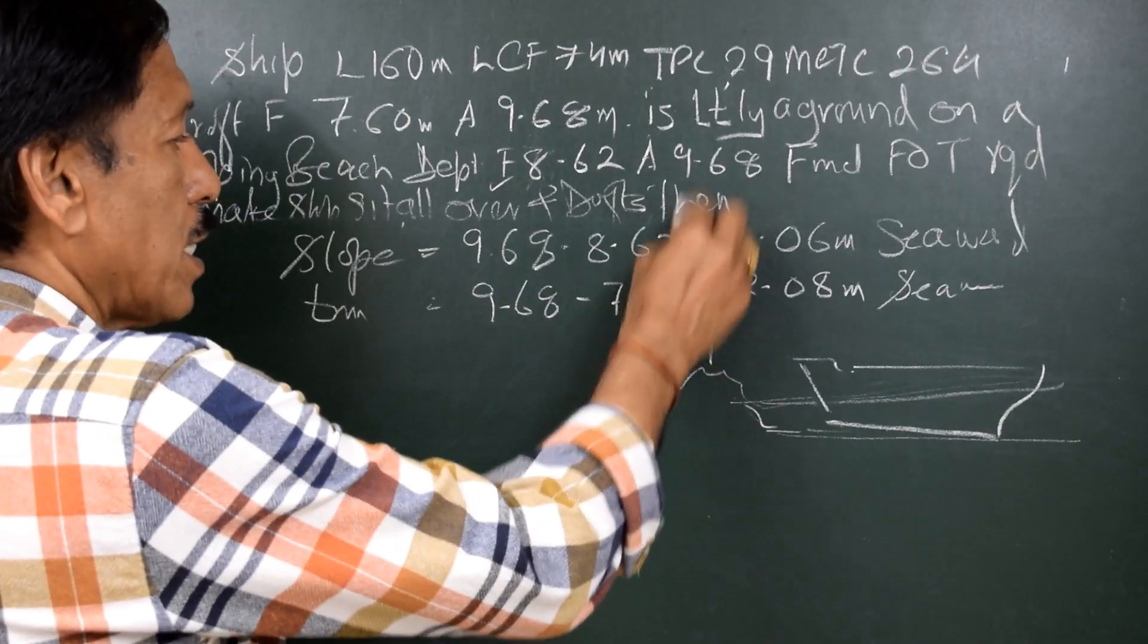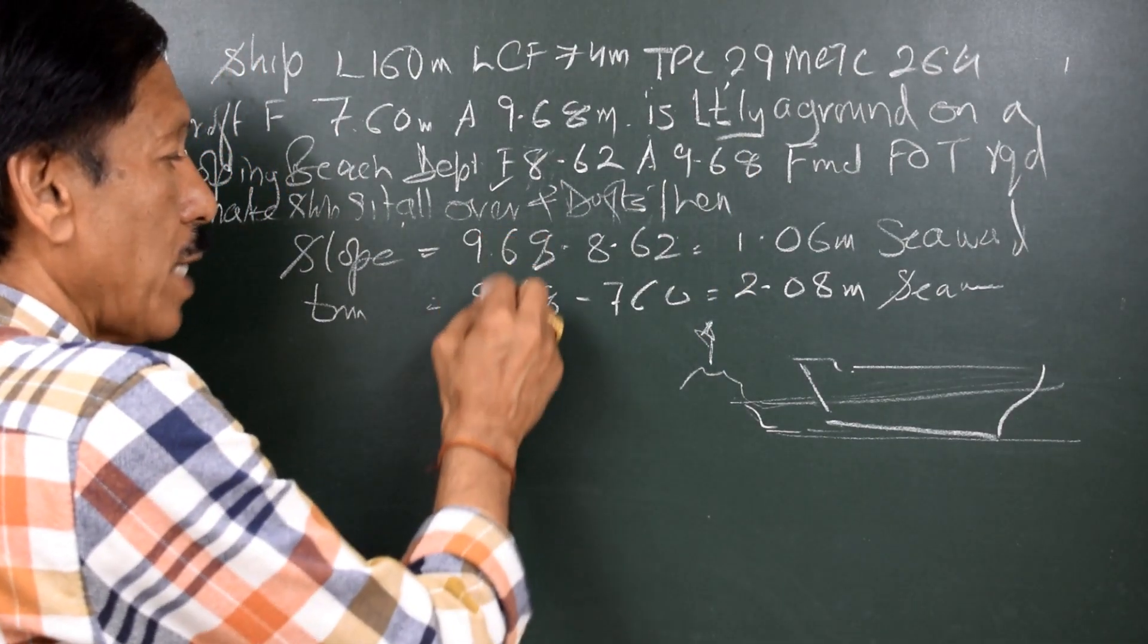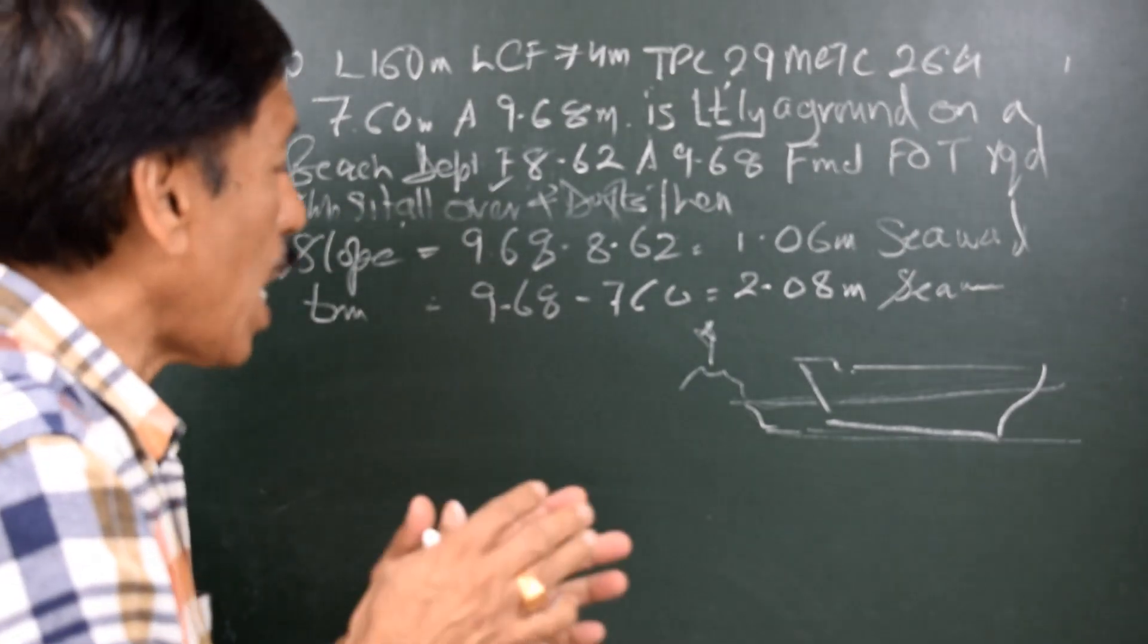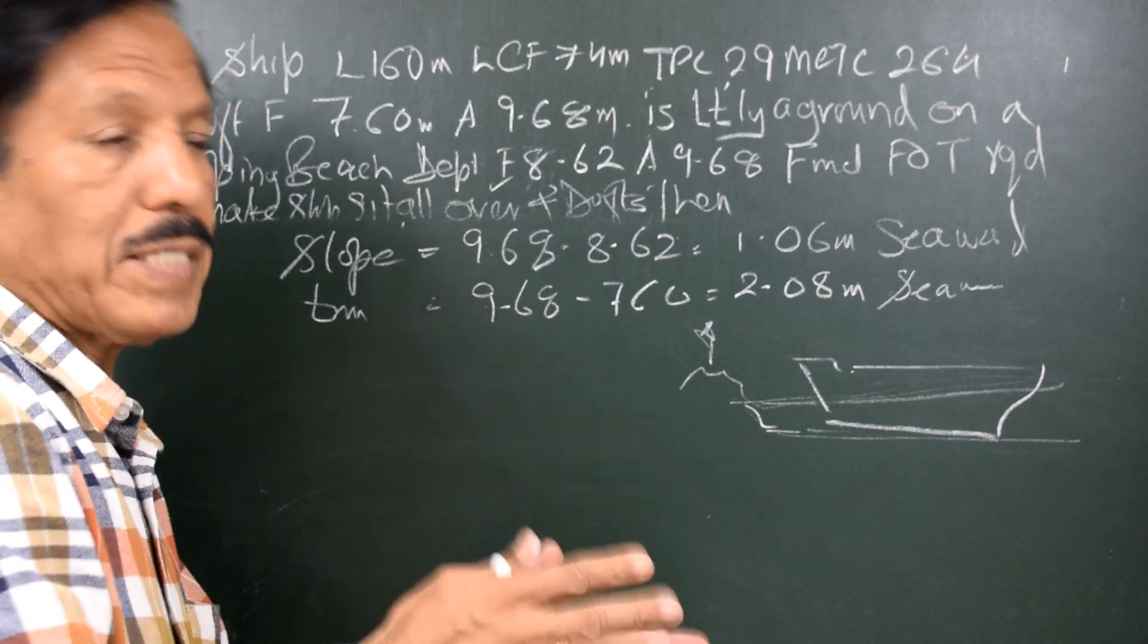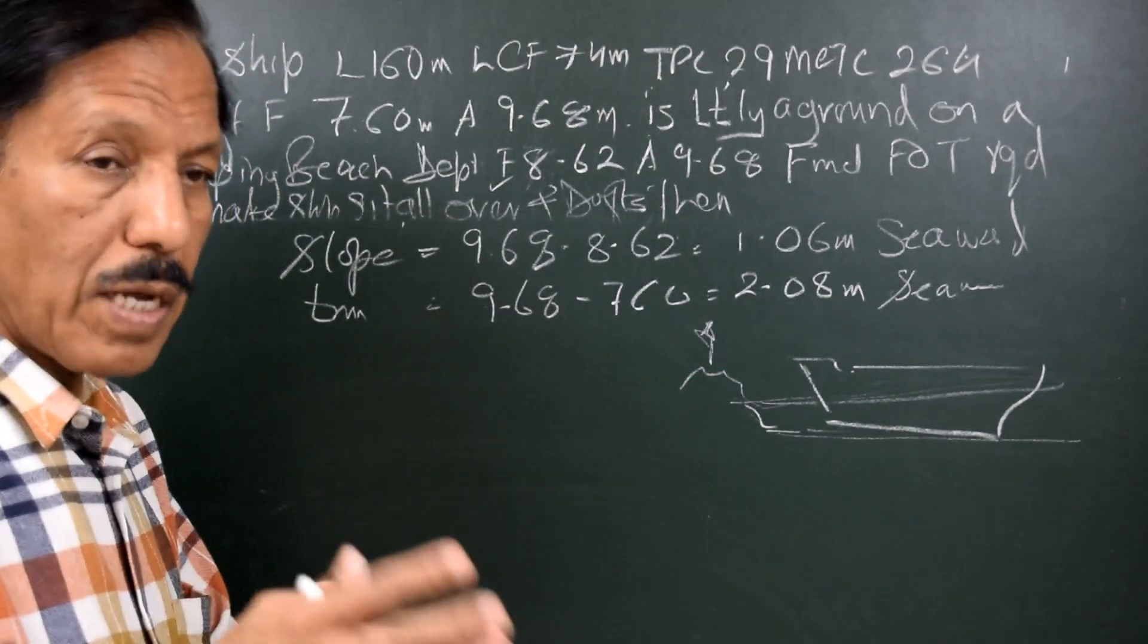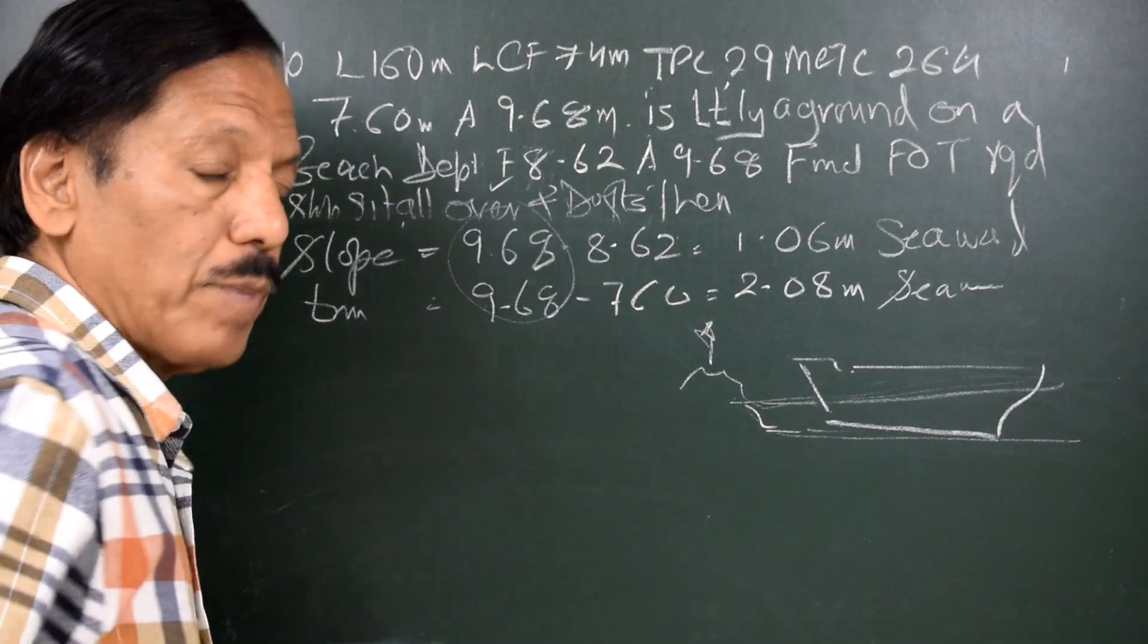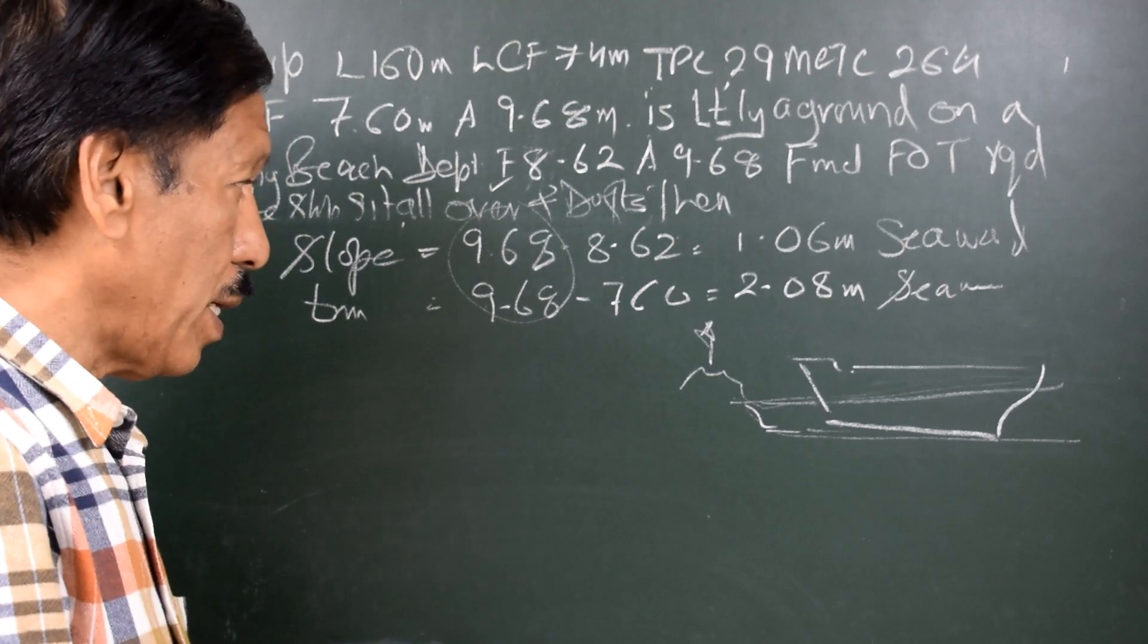If we compare the outside soundings and the draft of the vessel, the draft forward is same as the sounding forward and the draft aft is same as the sounding aft. So wherever the draft matches the depth of water, by common sense you would say that the vessel is touching at that point. So vessel is touching aft because the draft is 9.68 and the depth is also 9.68.